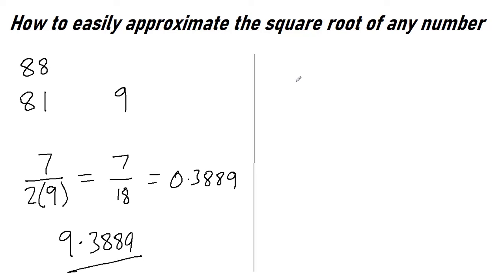Again let's check that with a calculator. Square root of 88 equals 9.3808. So there you go. Again it's pretty good. Even though you've got a gap of 7 here, that's still fairly accurate I would say.